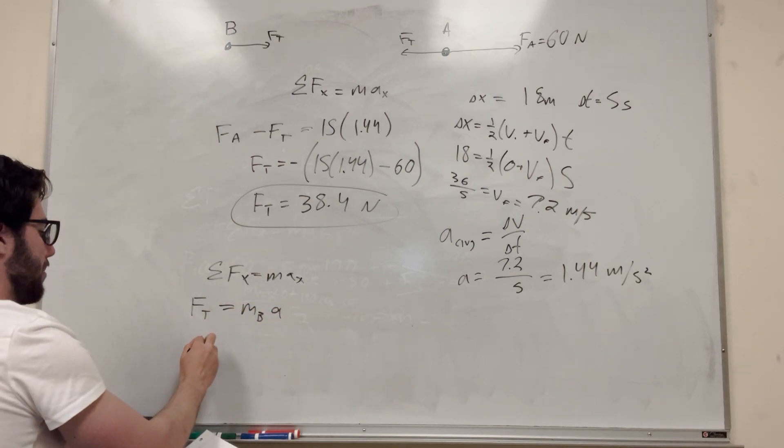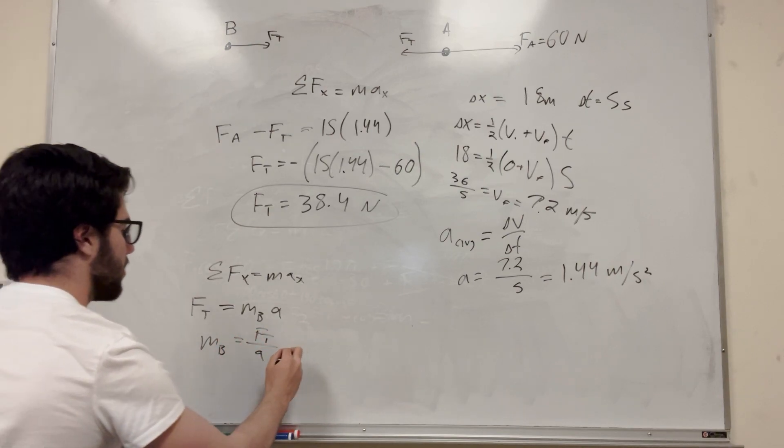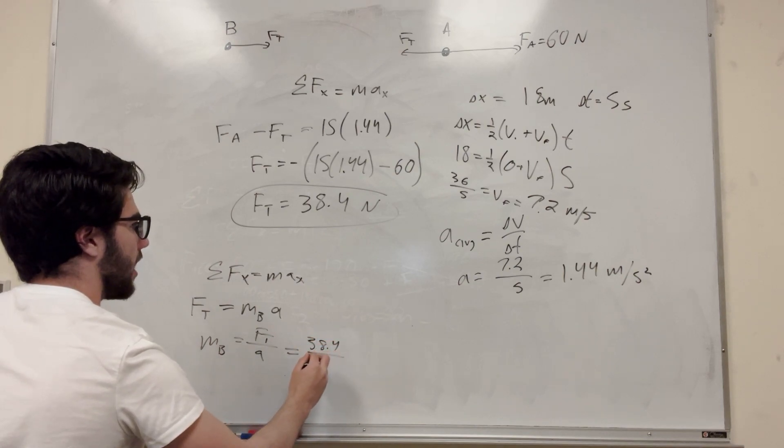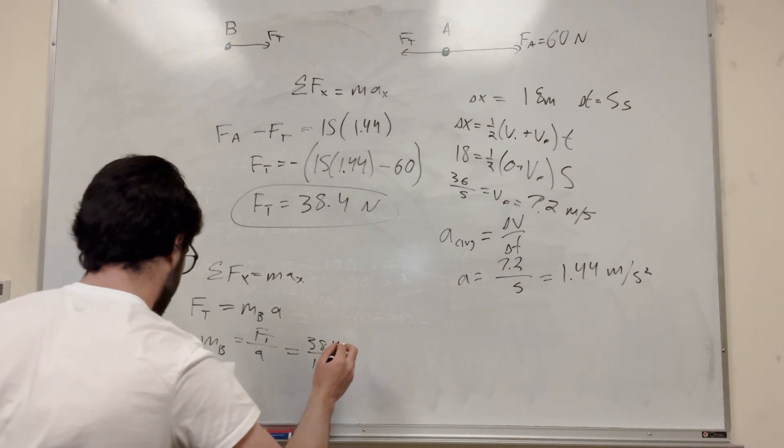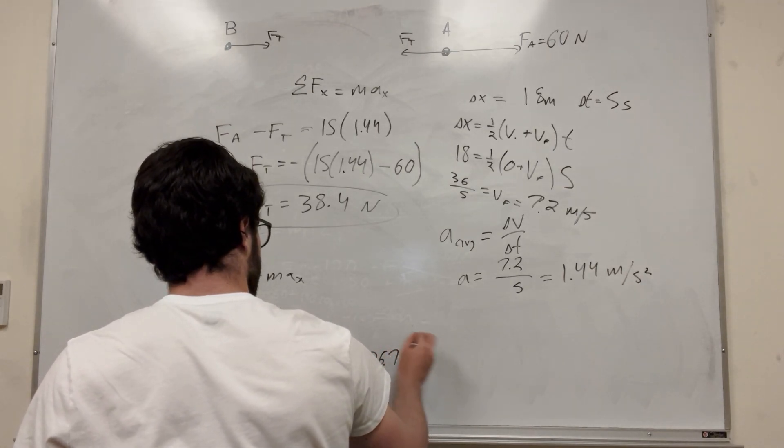So then if we're trying to find mass of B, mass of B is just going to be equal to force of tension divided by acceleration, which is equal to 38.4 divided by 1.44. And then if you get that, you get 26.7 kilogram, which is part B.